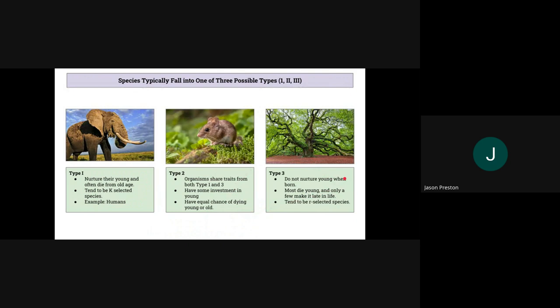Type 3 organisms do not nurture the young when they are born. Most die young and only a few will make it late in life. So these tend to be R-selected species from our previous lecture. And then Type 2 share traits from both 1 and 3. They have a little bit of investment in young, they might take care of them for a little while, but they have an equal chance of dying young and old. And you can see that example I included, which were rodents.